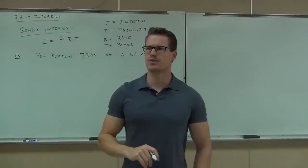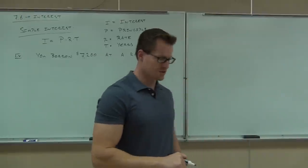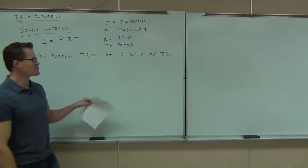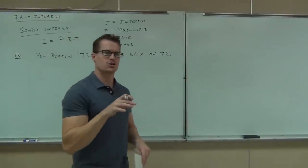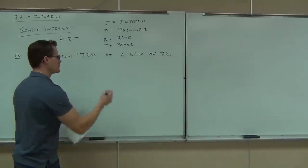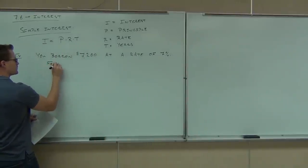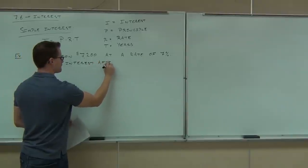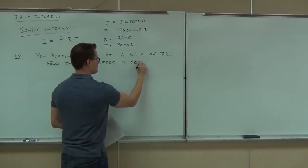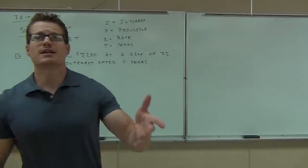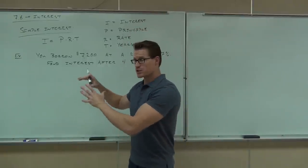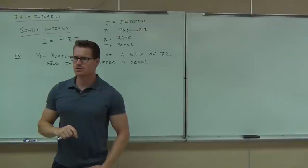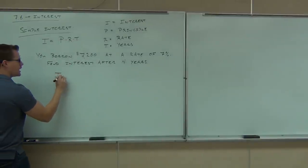How long do you want to pay the money off? Let's say four years. So find the interest after four years. The first thing you need to do is identify what each letter represents and which numbers go with those letters. We're looking for I. The principal P is $7,200. That's very good.